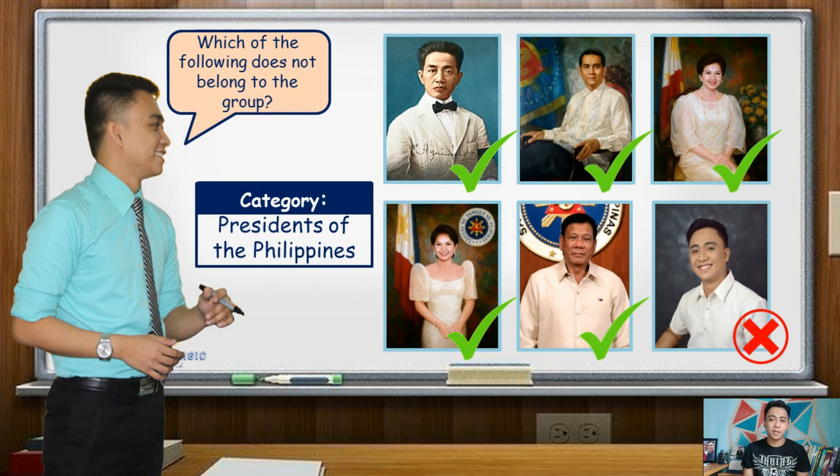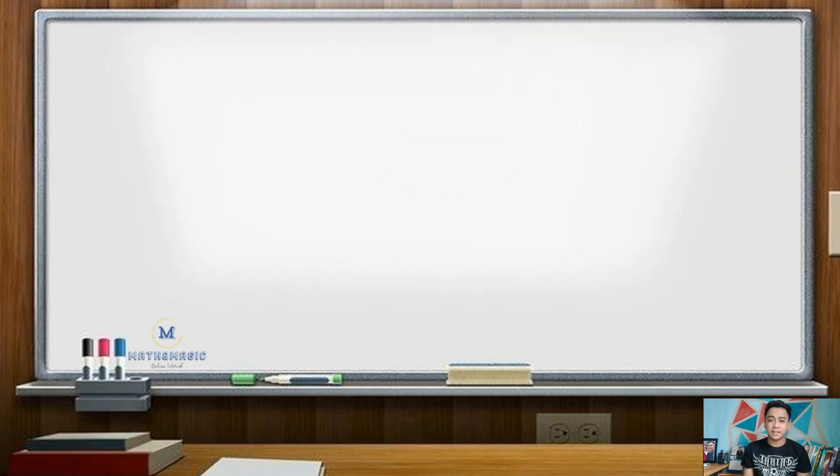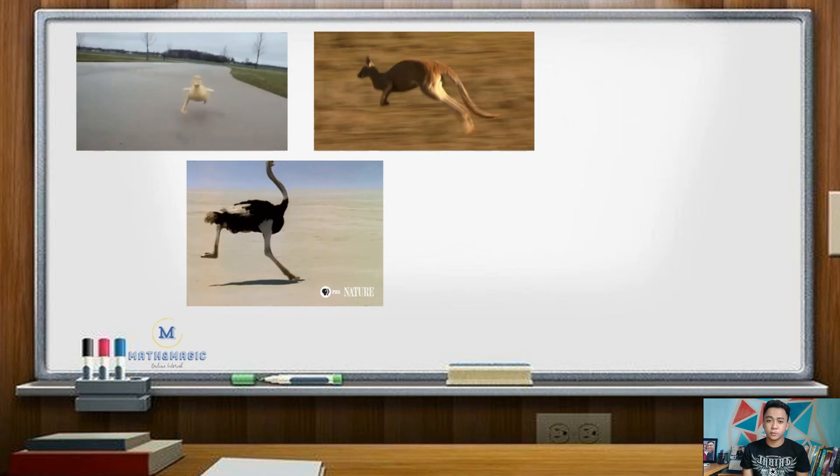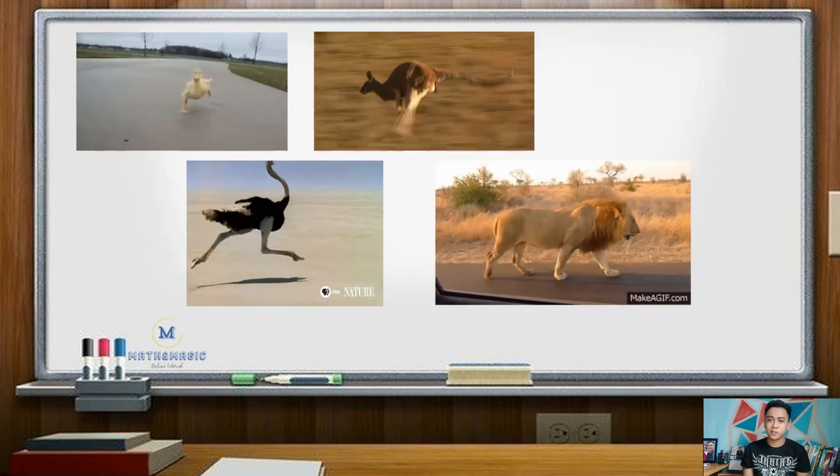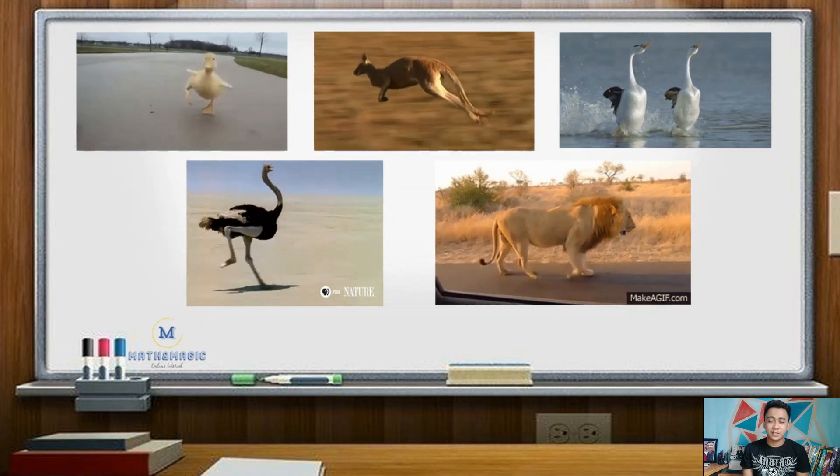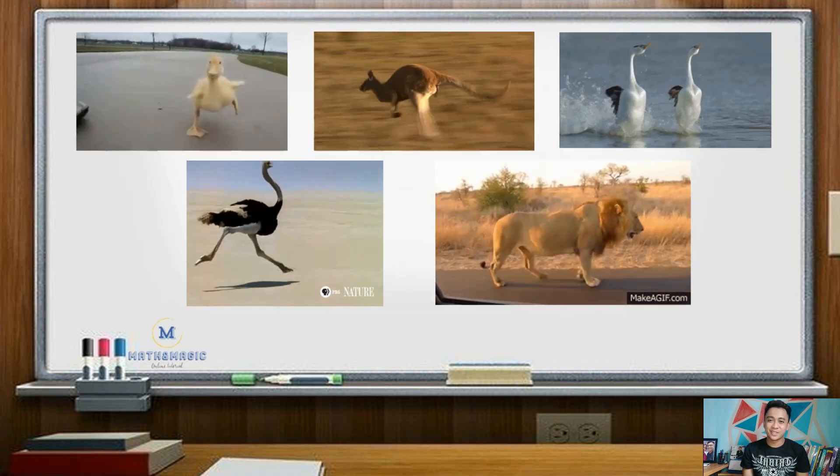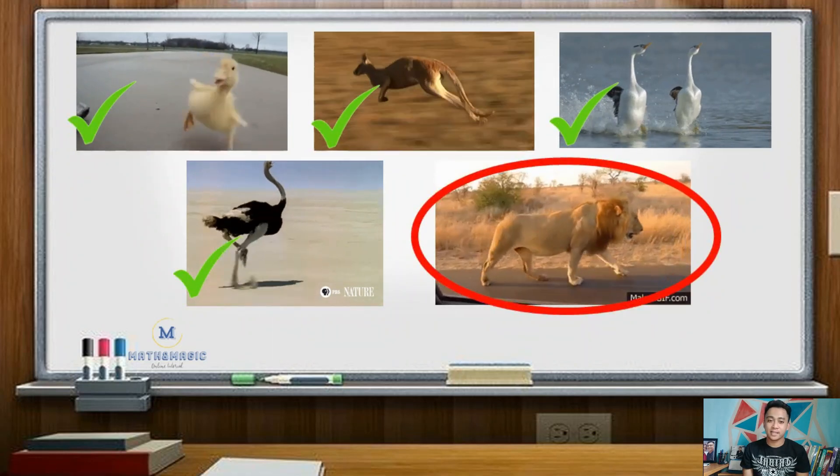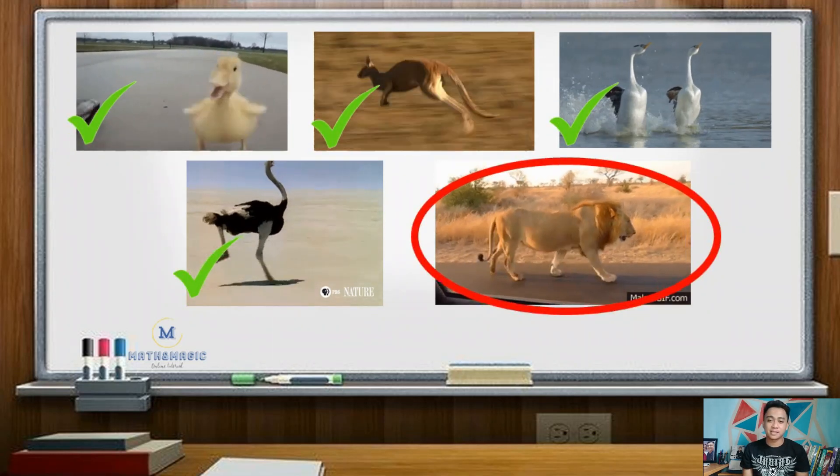Another example, which of these animals do not belong to the group? If your answer is lion, you're correct. Lion because it has four legs, while the rest of the animals are two-legged.